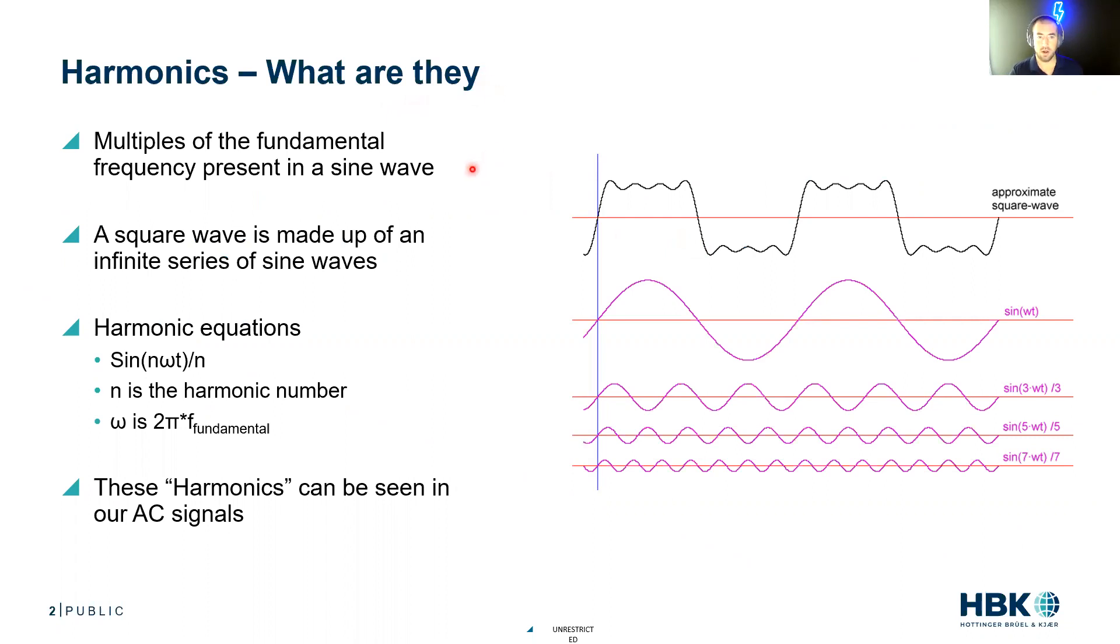Harmonics are multiples of the fundamental frequency present in a sine wave. The idealized example for harmonics is a square wave, because a square wave is an infinite series of sine waves. Let's have this square wave approximation - the fundamental is sine(ωt), so we get this really nice smooth sine wave.